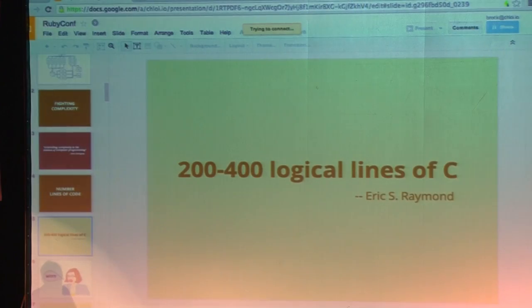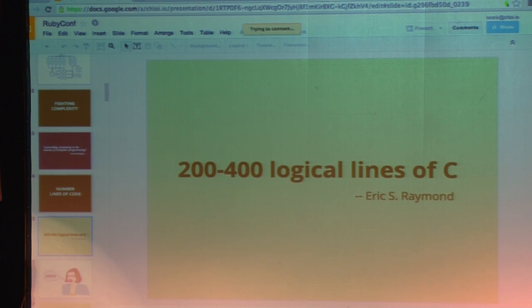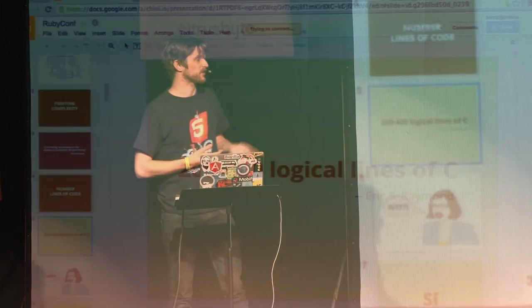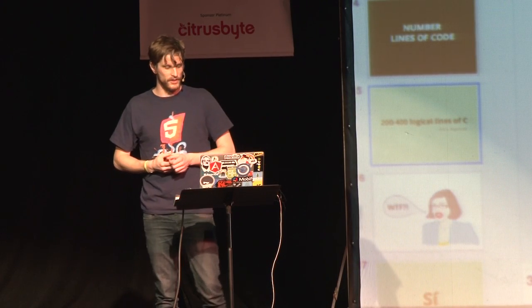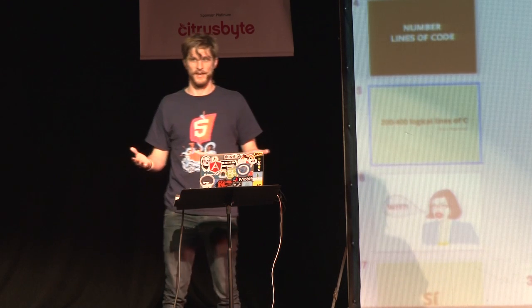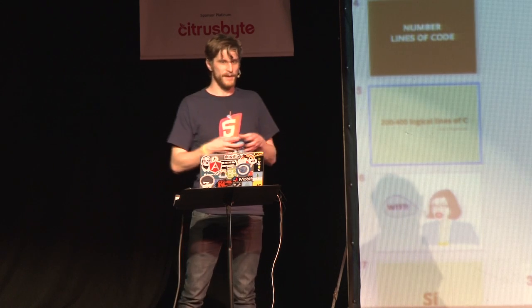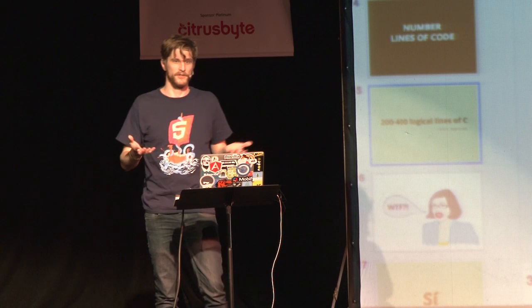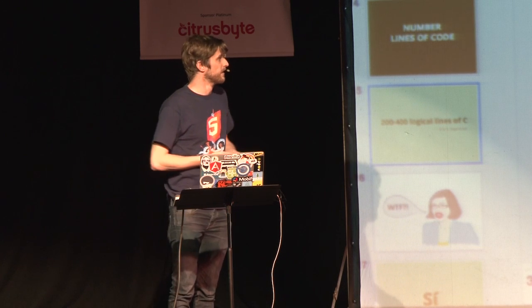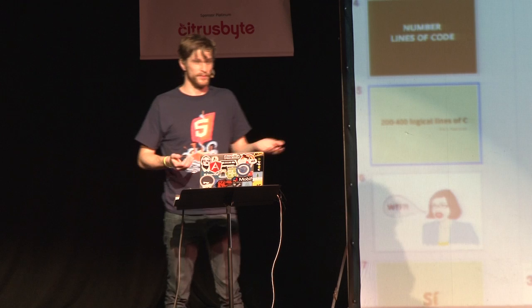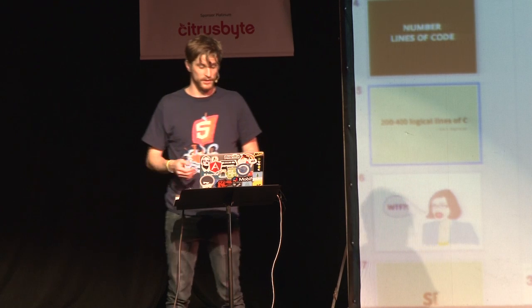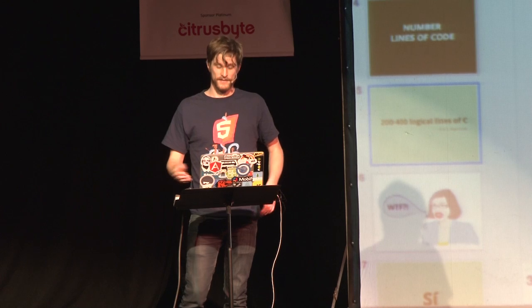So what is the ideal amount of code? Eric S. Raymond said 200 to 400 logical lines of C is optimal. There are no hard rules on this, but use this as a guideline — I believe you can make meaningful libraries in 200 to 400 lines of code. And especially in Ruby or JavaScript, you can do a lot more in 200 to 400 lines of code than you can in C.